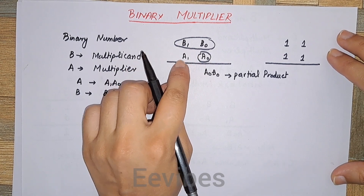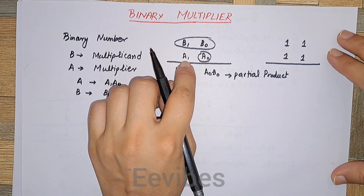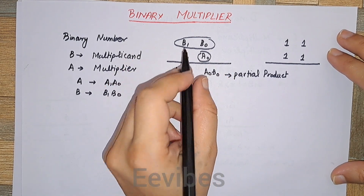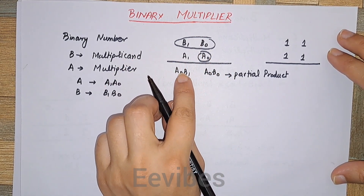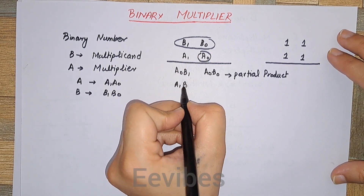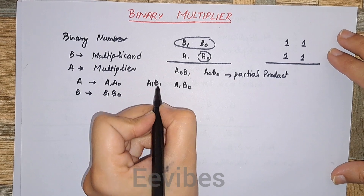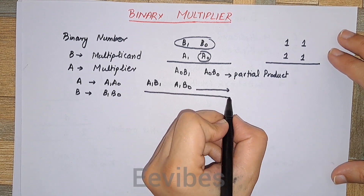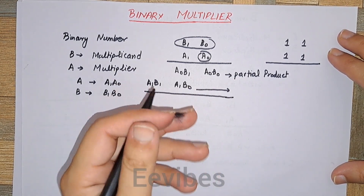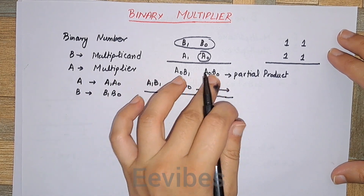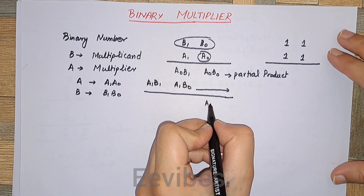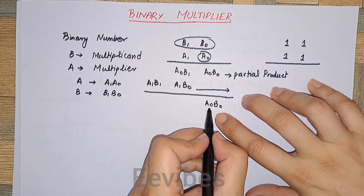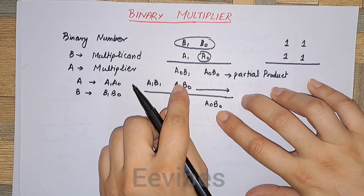In the next step we take the second bit of the multiplier and do the same operation, but this time we write the partial product with a left shift. So we skip one position and write the next partial product below, giving us a1·b0 and a1·b1. This is the second partial product. After obtaining the partial products, the next step is to perform the addition. The last or LSB term a0·b0 comes as it is.